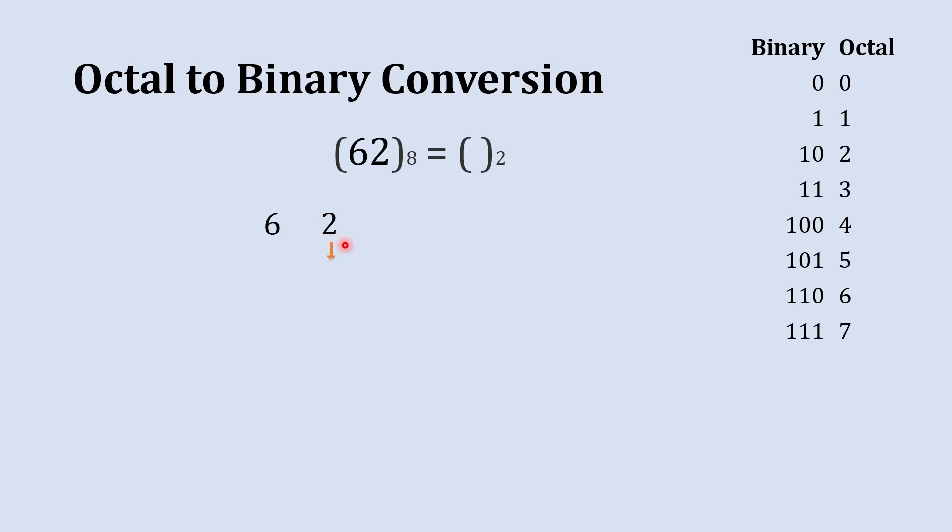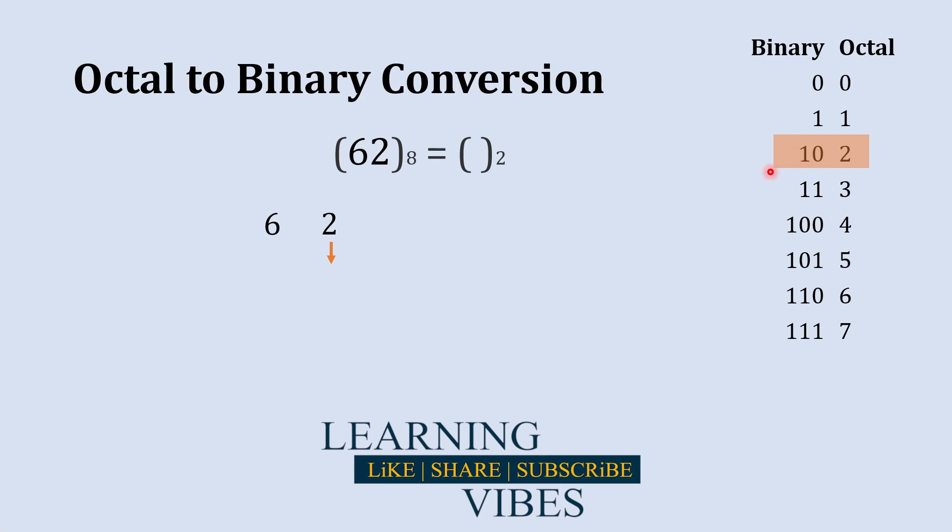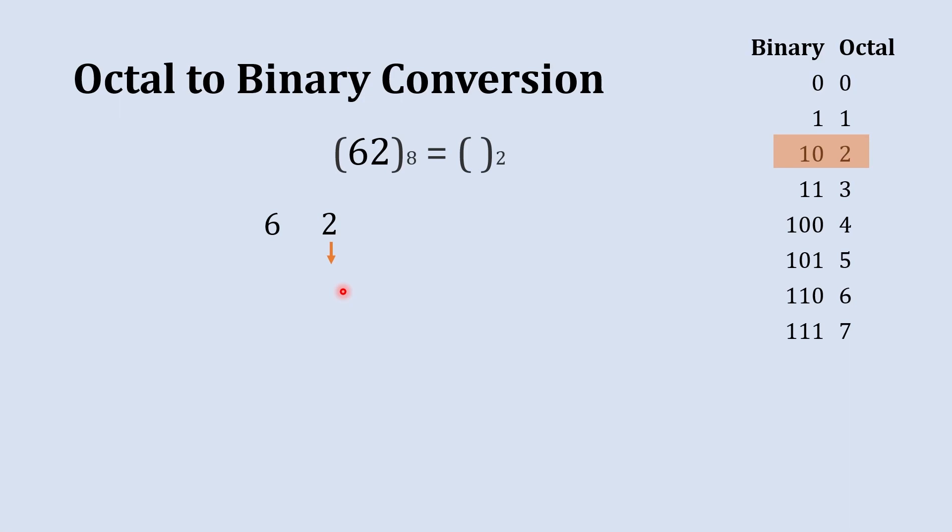This is our binary to octal conversion table for reference. We will start with 2. What is the binary equivalent to 2? That is 10. But we are not going to write 10 here. Instead of writing the binary equivalent in two digit manner, we always write this in three digit manner. So instead of writing 10, we are going to write 010. We'll add one more zero on the left hand side and that will not create any impact on the valuation of that number.